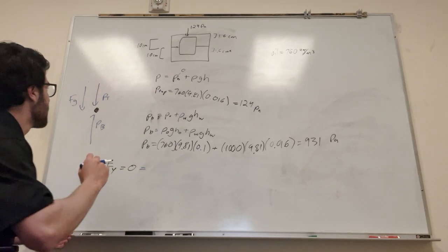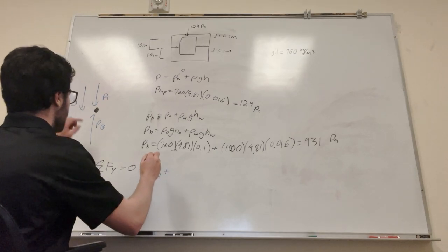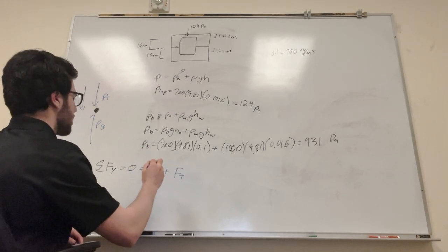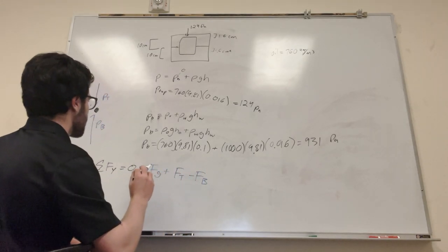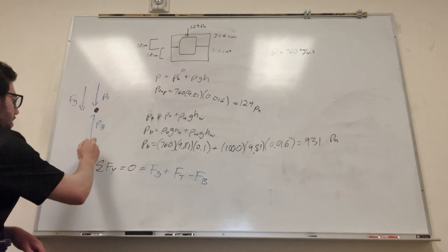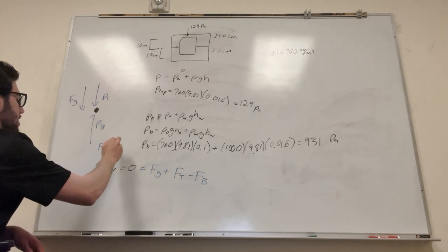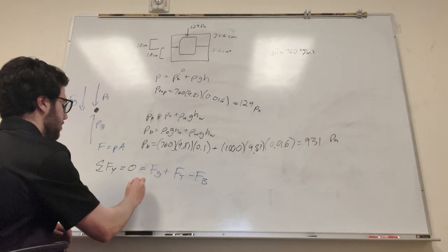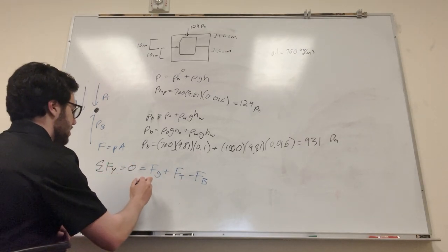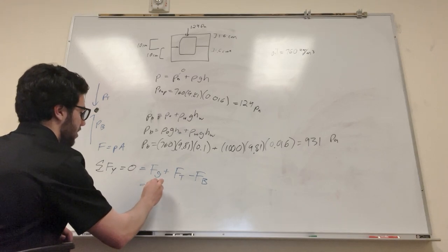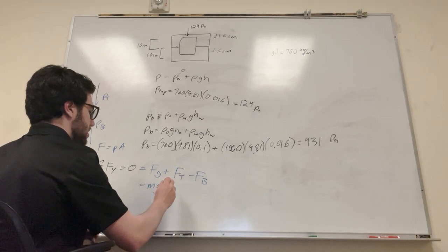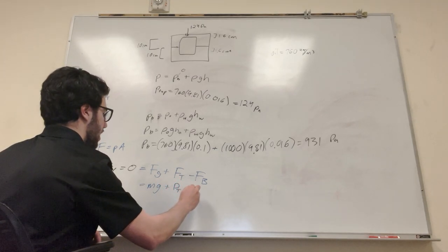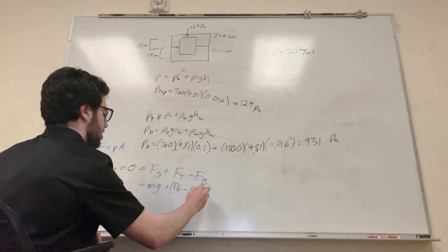Okay, so now that we've got these three forces figured out, what we need to do is plug it into this equation. Okay, so this 0, because it's equal to y in the y direction, it's gonna be the sum of the forces. So it's gonna be force of gravity, and then plus the force from the top of the pressure, and then minus the force from the bottom.